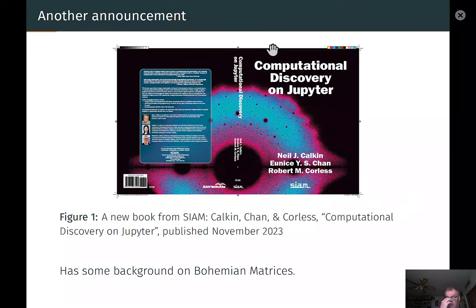Another announcement. We just published a new book, Computational Discovery on Jupiter, by Neil Kalkin, Eunice Chan, and myself. This was published in November. There is an open access version of this online. Just google Computational Discovery on Jupiter and you'll see it. The relevance for this talk is that this has a chapter on Bohemian matrices, and I'm going to be talking about Bohemian matrices.